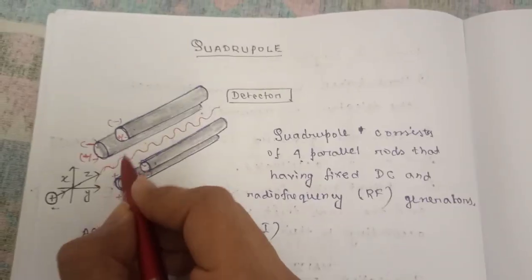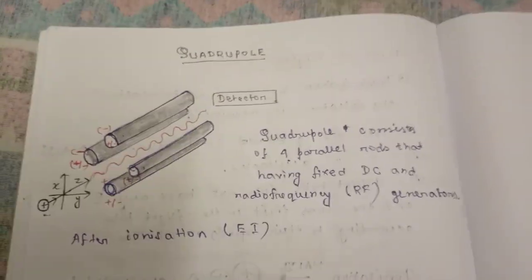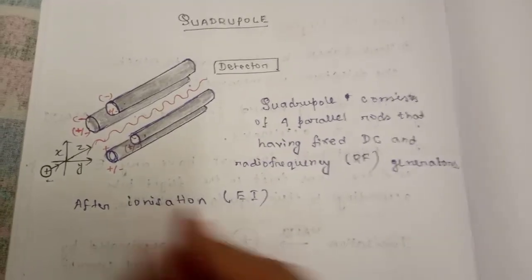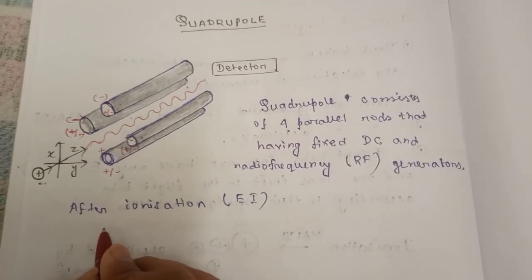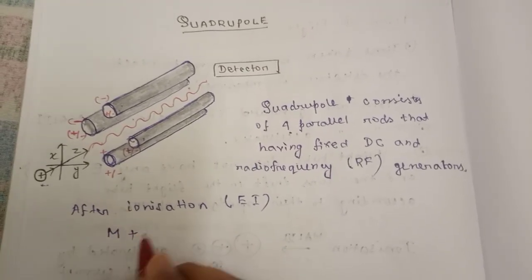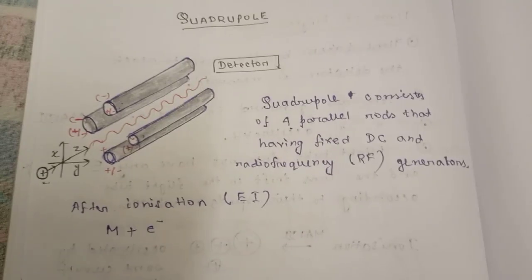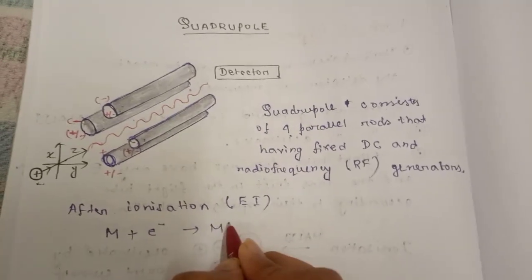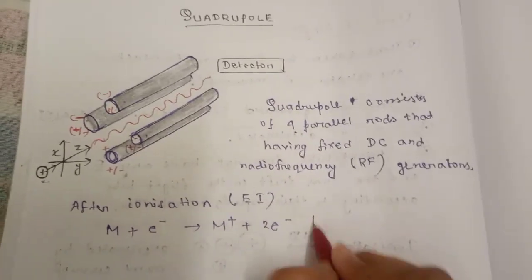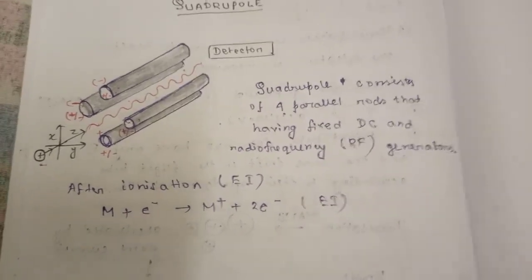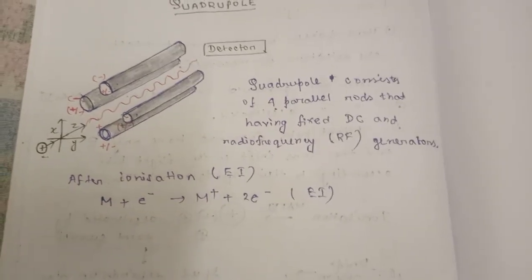This ion will go through these rods. Do you remember electron ionization? You can check my previous videos, but let me tell in simple. If the sample is M, it will be hit by one electron. It will make M plus and there will be two electrons. So this is EI technique, electron ionization or electron bombardment.